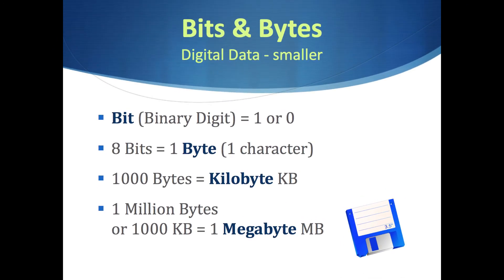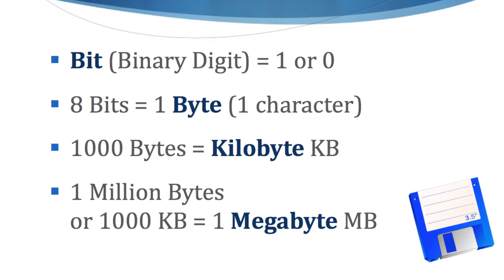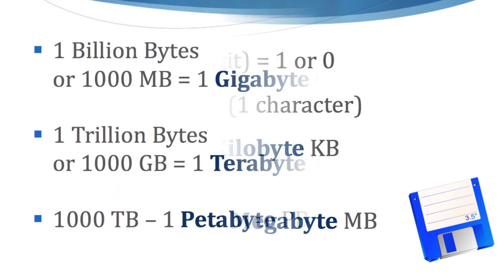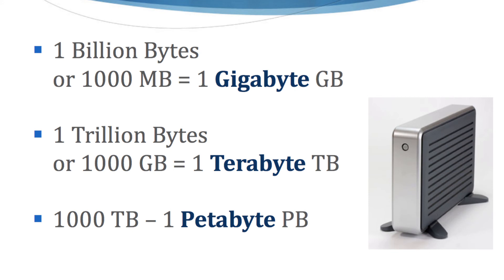In terms of storage units, the binary digit, or bit, is the smallest unit, composed of a one or a zero, which is what computers read and write. Eight bits make one byte, and then we start counting by bytes. A kilobyte is a thousand bytes, a megabyte is a million bytes, a gigabyte is a billion bytes, and a terabyte is a trillion bytes — which is the scale of today's hard drives. Beyond that, servers and similar systems may be measured in petabytes.